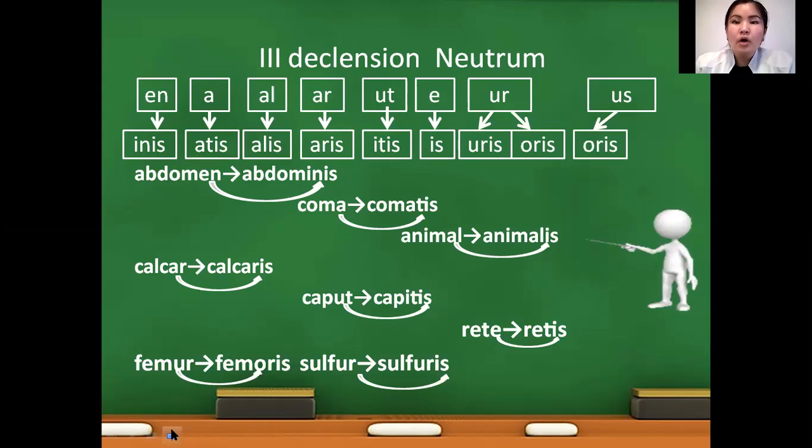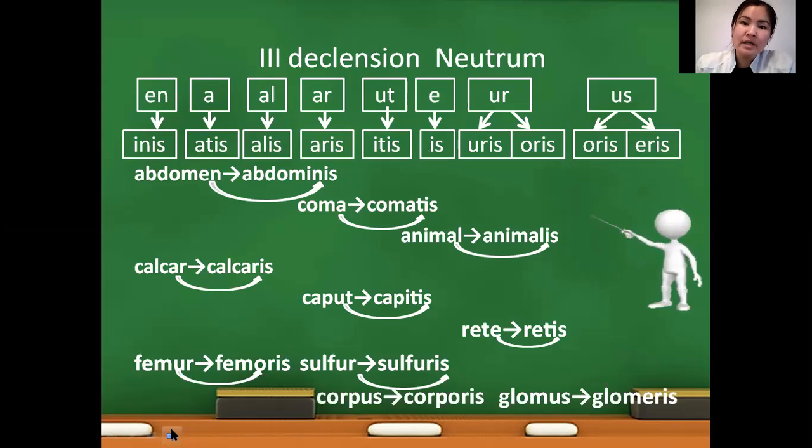For ending US also two endings of genitivus: oris and eris. But there is no rule, that is why we need to use dictionary forms of nouns: corpus to corporis, glomus to glomeris.